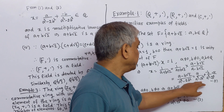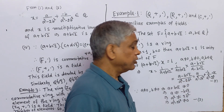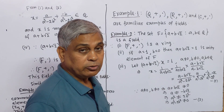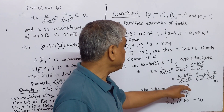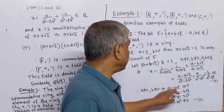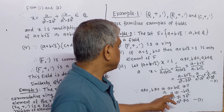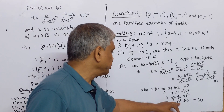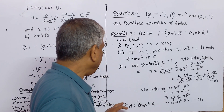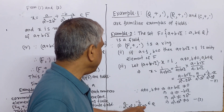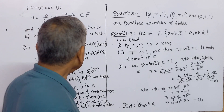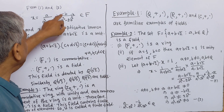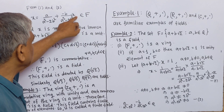We must show the denominator a² − 2b² is not zero. Since a ≠ 0 and b ≠ 0, a + b·√2 ≠ 0, which means a ≠ −b·√2. Squaring both sides, a² ≠ 2b², so a² − 2b² ≠ 0. Therefore a/(a² − 2b²) and −b/(a² − 2b²) are rational numbers in Q. So x = [a/(a² − 2b²)] + [−b/(a² − 2b²)]·√2 belongs to F.